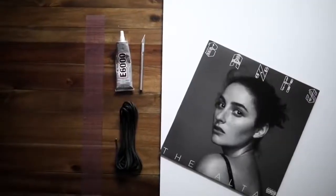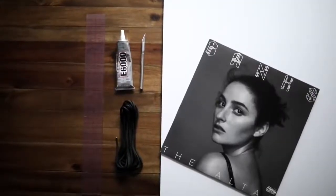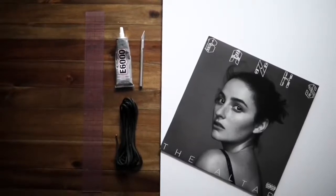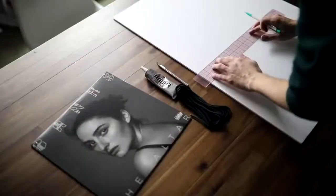Gotta save one of my favorites for last. All you're going to need for this is some more foam core, an album, E6000, black cord, an Exacto knife, and your ruler.